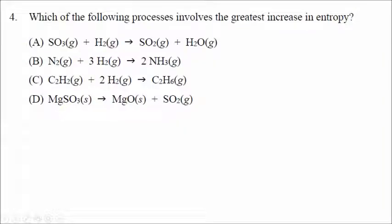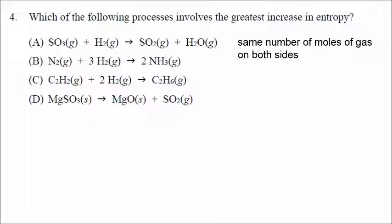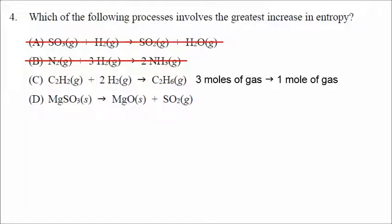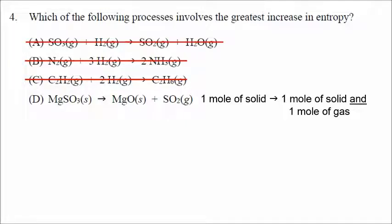Question four asks which process involves the greatest increase in entropy. We're looking for processes involving solids to liquids, liquids to gas, or increasing moles of gas. Choice A has the same moles of gas on both sides — no significant change. Choice B goes from four moles of gas to two — entropy decreasing. Choice C goes from three moles of gas to one — entropy decreasing. Choice D goes from one mole of solid to one mole of solid and one mole of gas — becoming more dispersed and random. Correct answer is D.